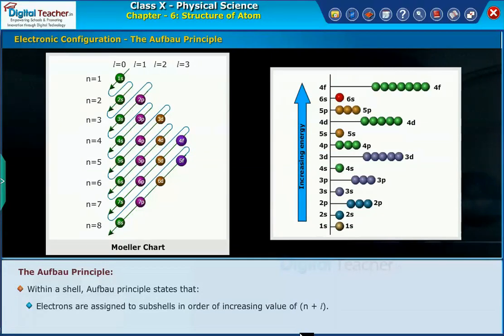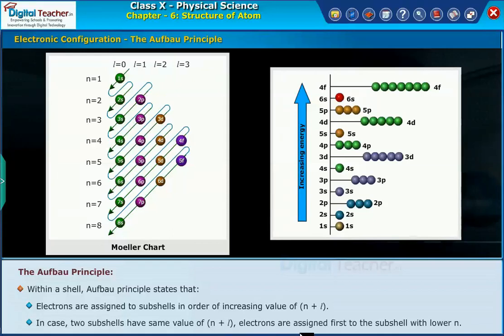Within a shell, Aufbau principle states that electrons are assigned to sub-shells in order of increasing value of n+l. In case two sub-shells have same value of n+l, electrons are assigned first to the sub-shell with lower n.